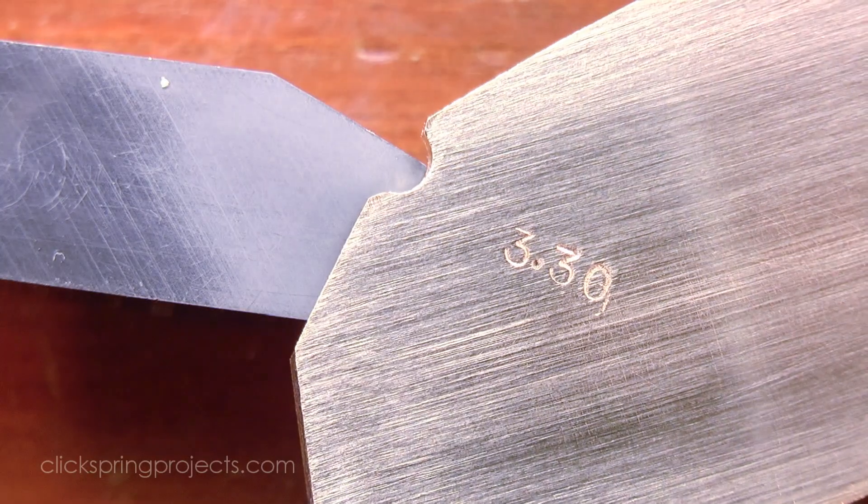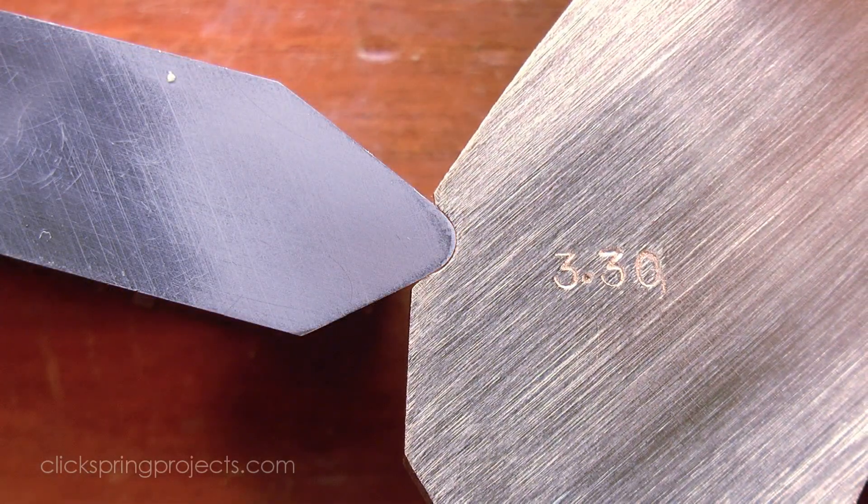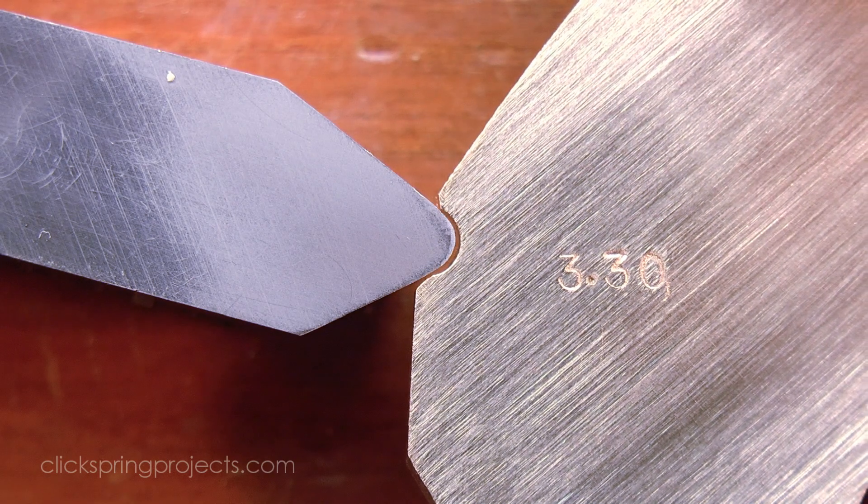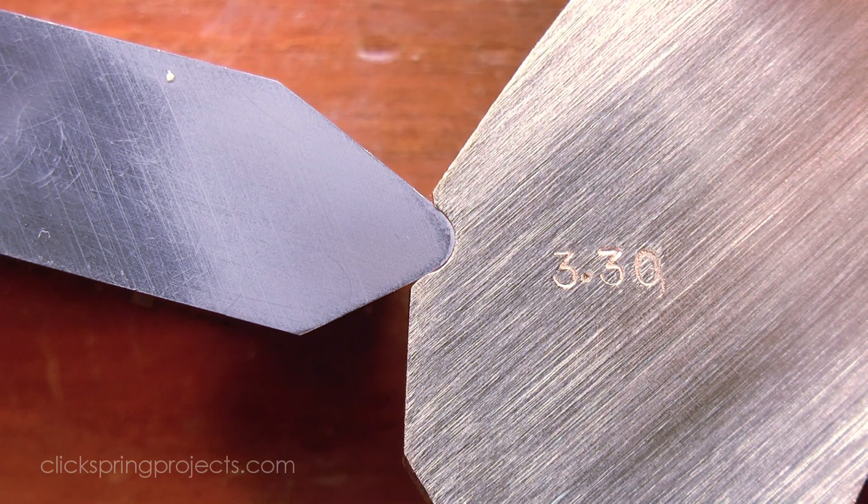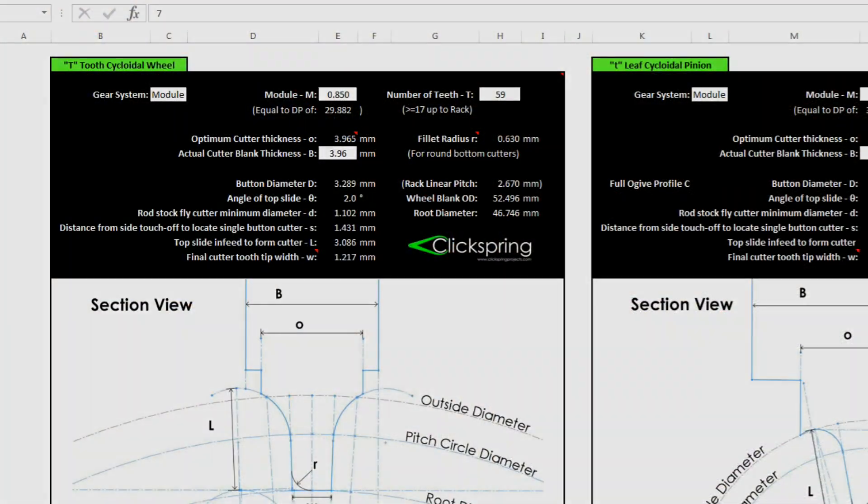It's a reliable way to produce an accurately shaped radius for the cutter profile. An alternative for the larger module cutters is to grind the radius directly into a high speed steel blank, using a simple shop made gauge to confirm the radius.